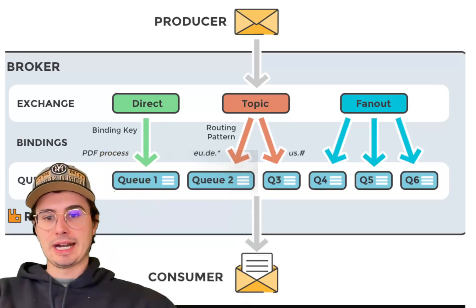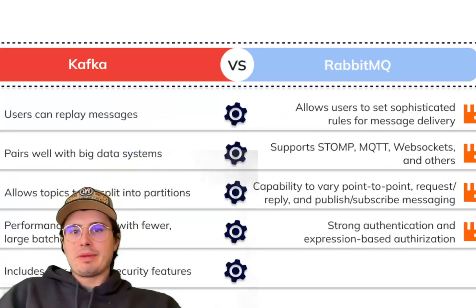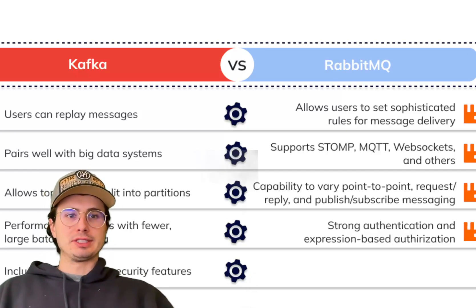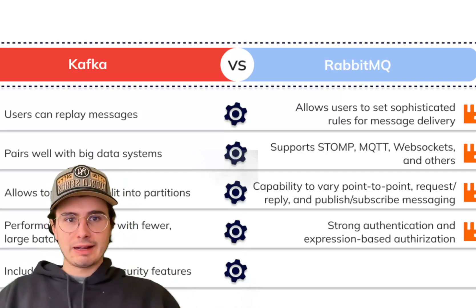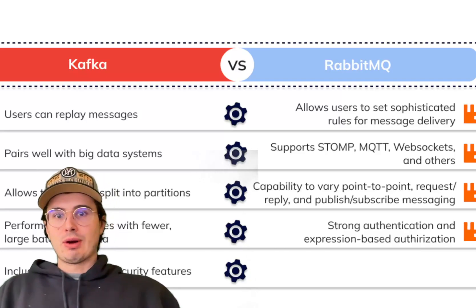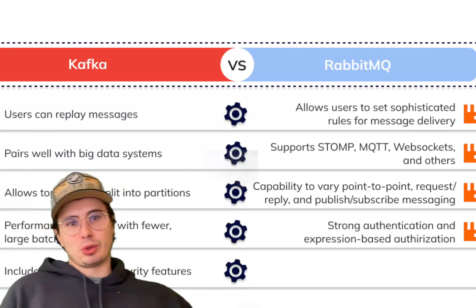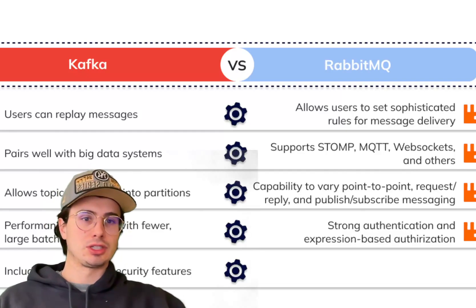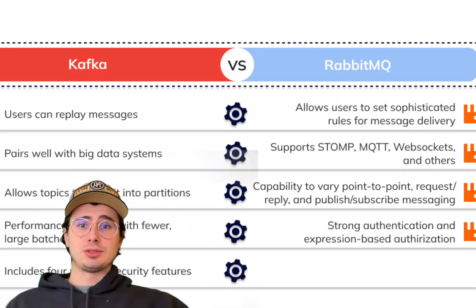At a high level, the main difference between Kafka and RabbitMQ is how they handle messages. Kafka employs a publish-subscribe model where producers write messages to topics and consumers subscribe to those topics to receive data. Messages in Kafka are durably stored on disk, replicated across brokers for fault tolerance, and remain available for a configurable retention period — making it a long-lived source of truth for what messages have been produced and consumed. This design allows Kafka to function as both a real-time data stream and a persistent event store.